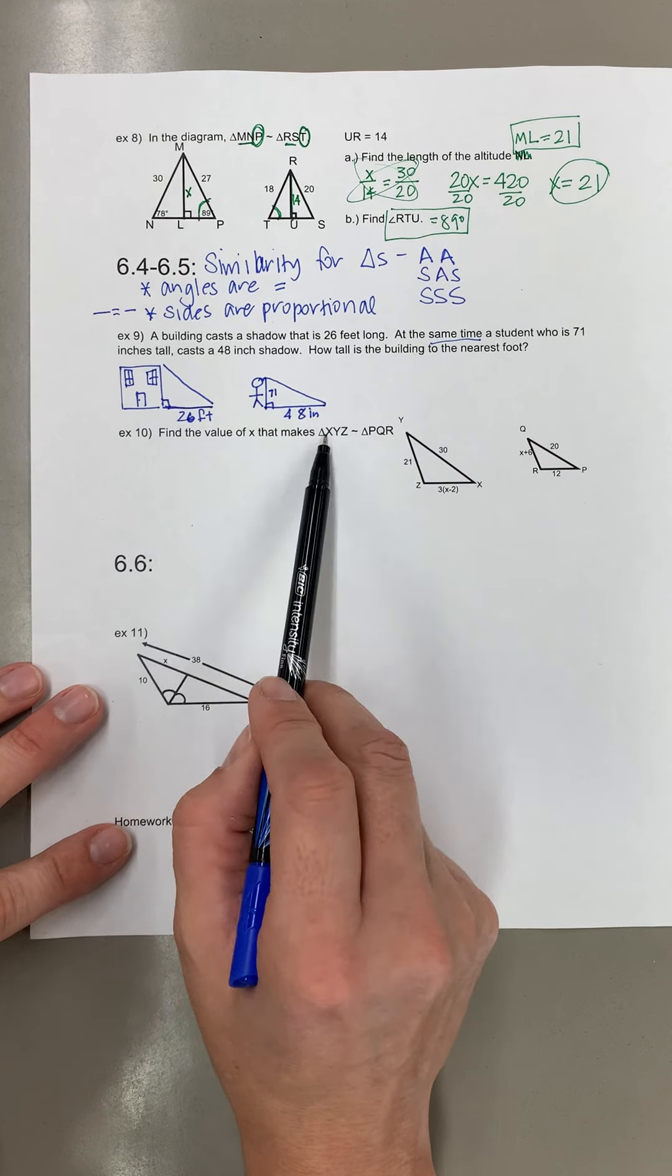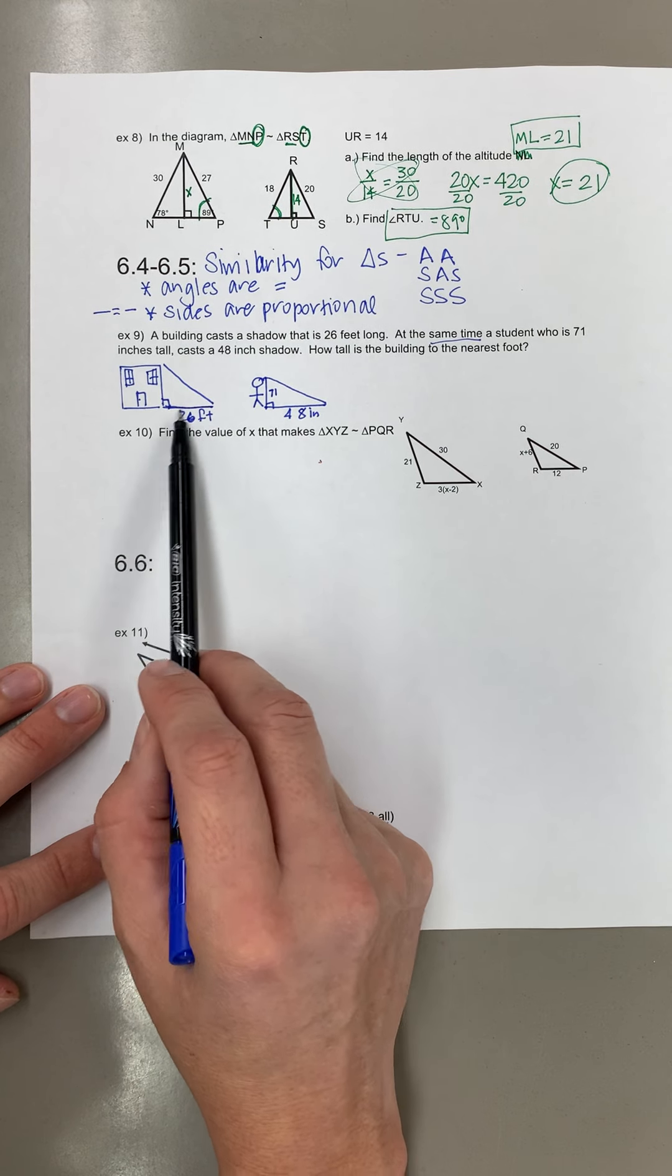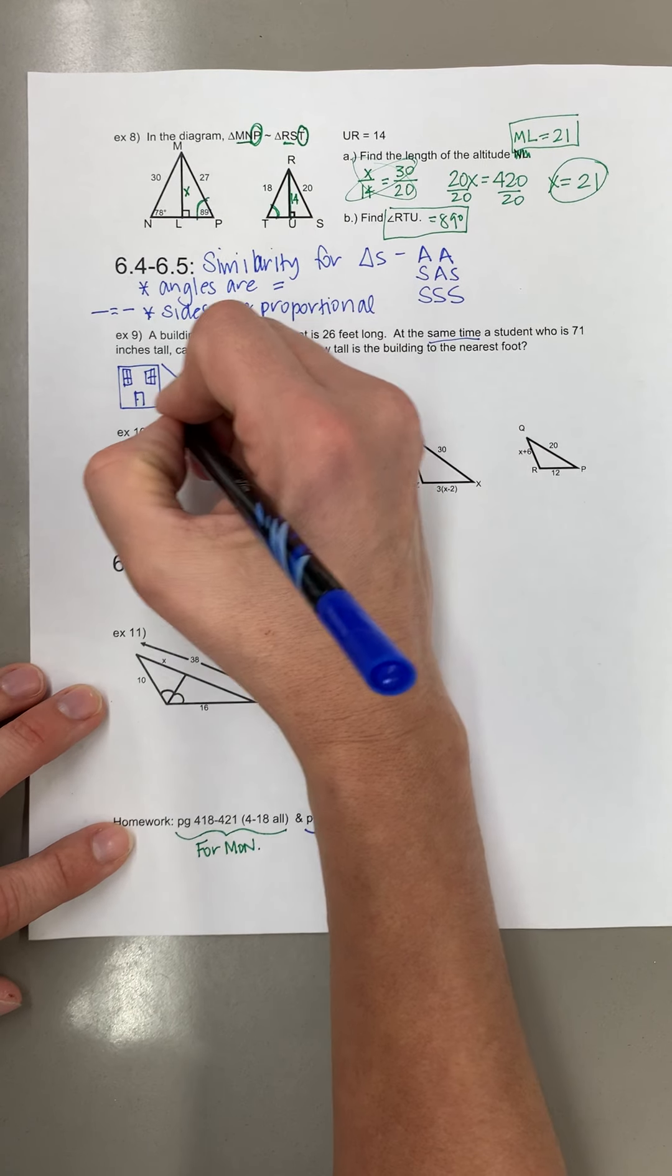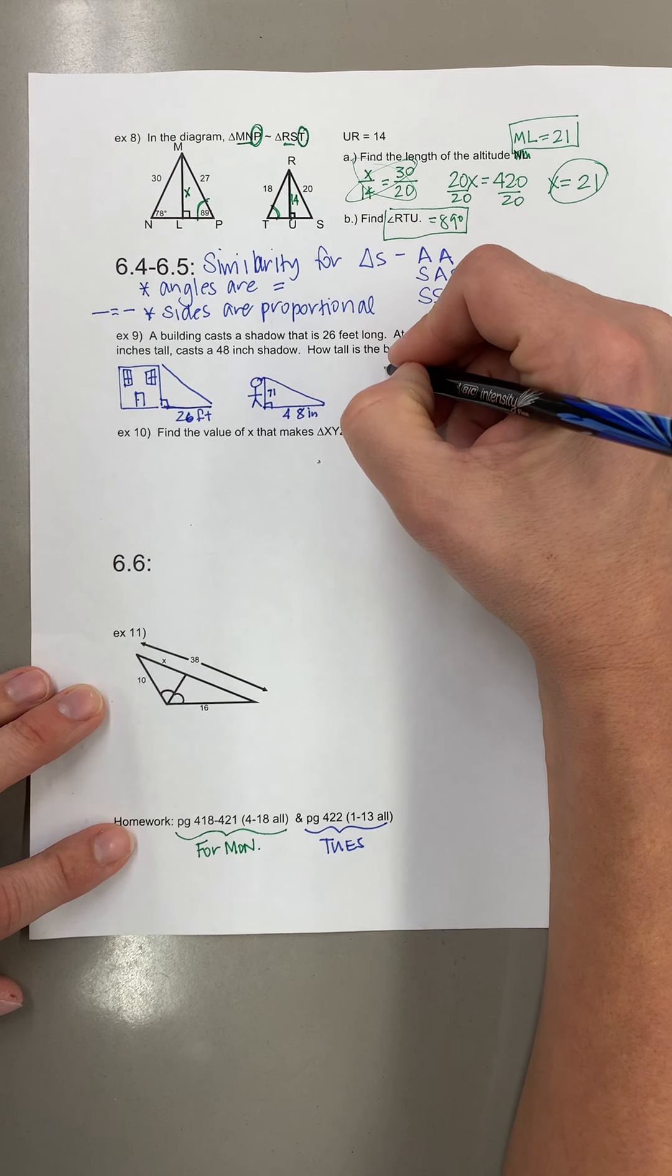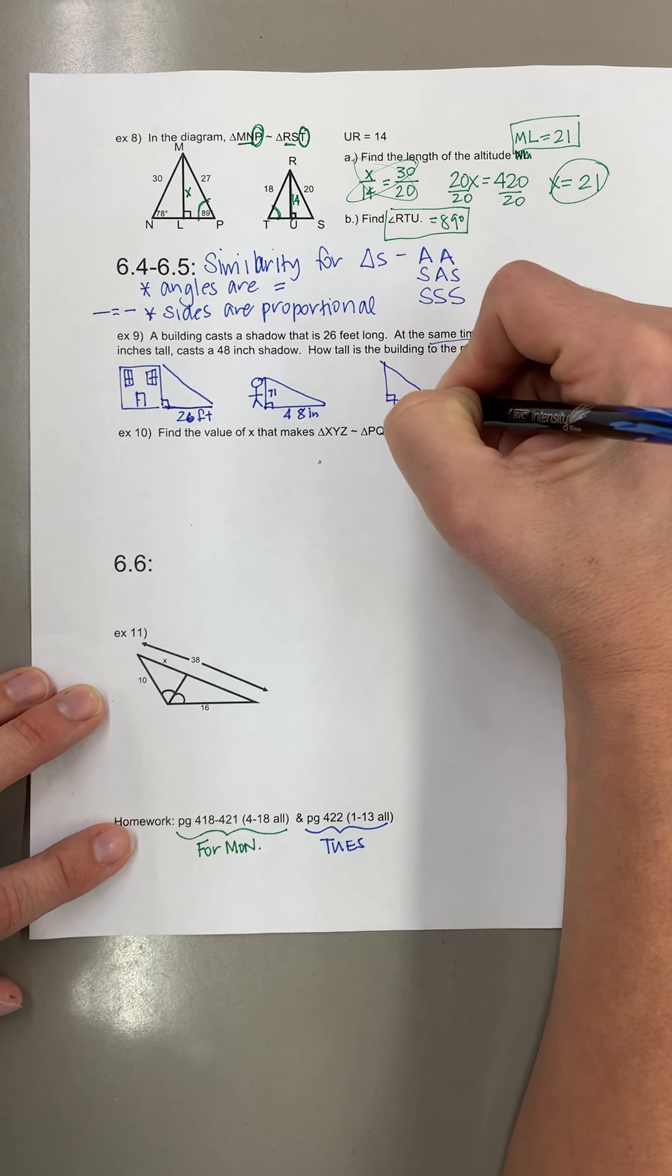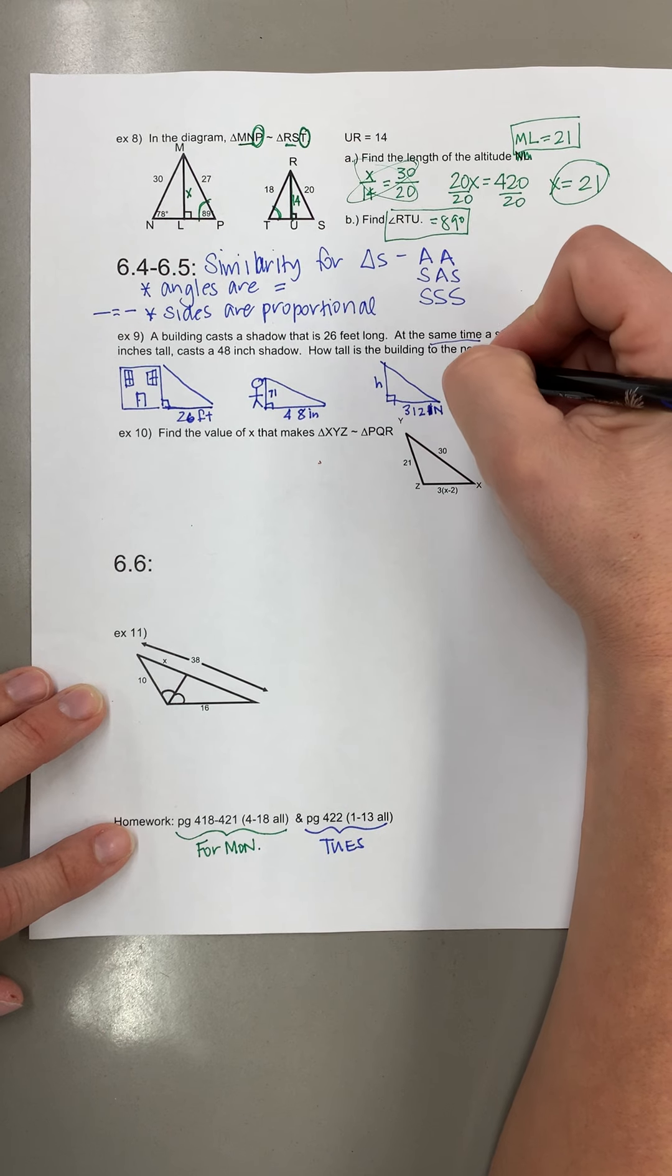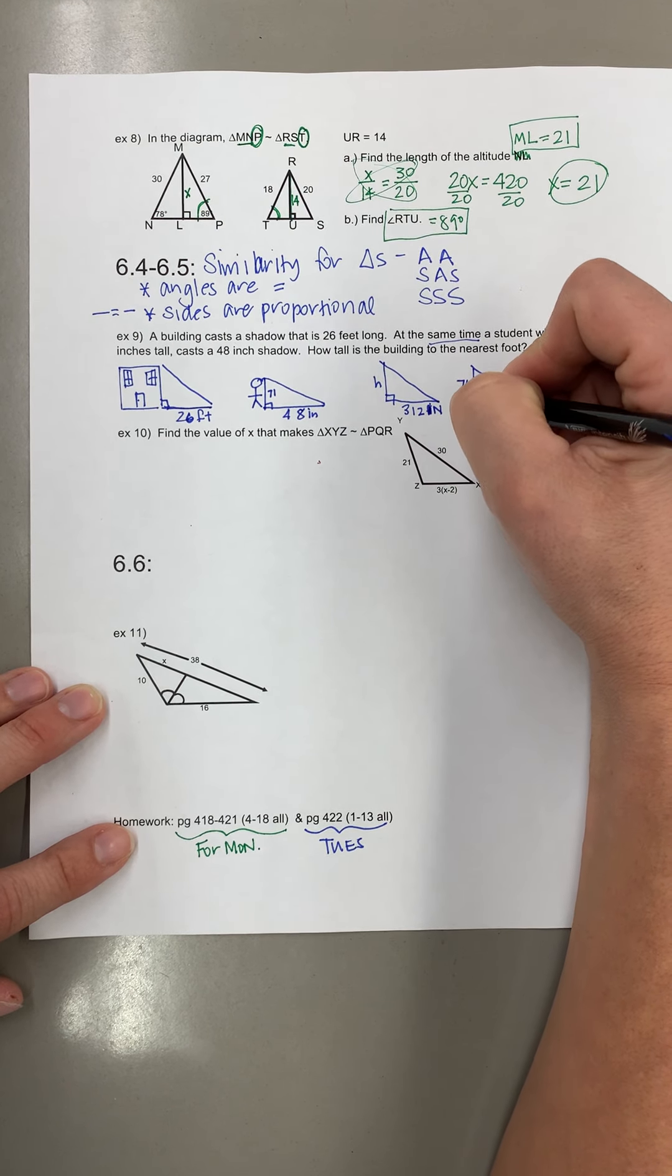Now feet and inches don't make sense. So first of all we have to change this to inches. So 26 feet we're going to change into inches. There's 12 inches in a foot. So we're going to change 26 feet into 312 inches. I'm going to redraw this. So 312, no sorry that should be inches. And then we don't know the height of the building. And then the student, again bad drawing, 71 inches and 48 inches.